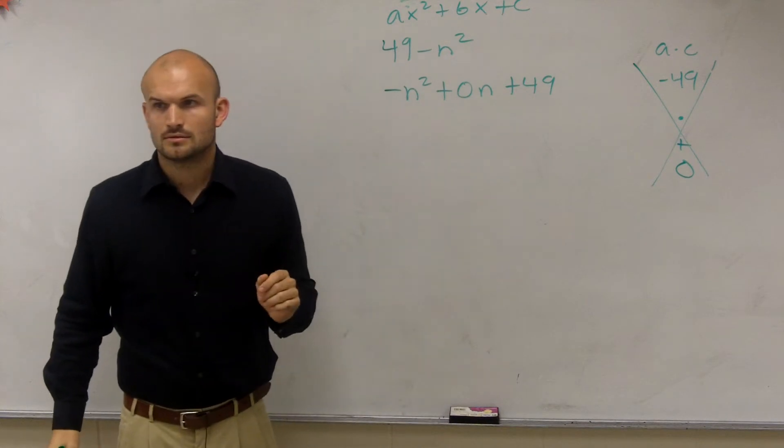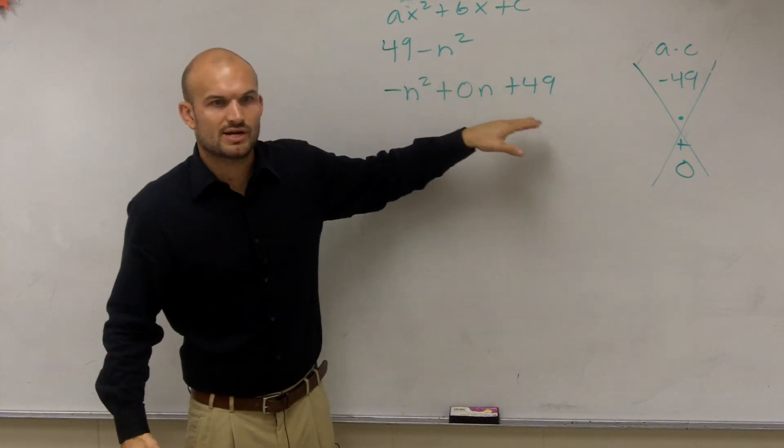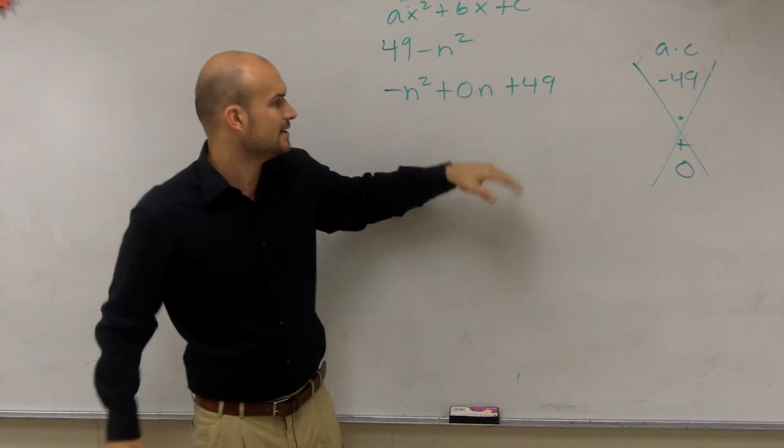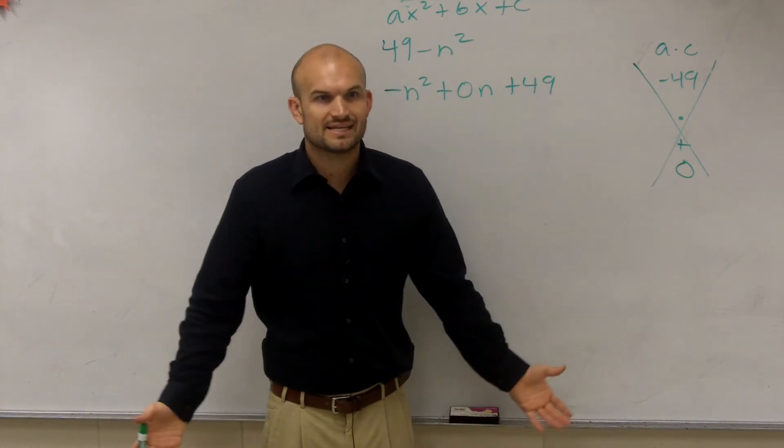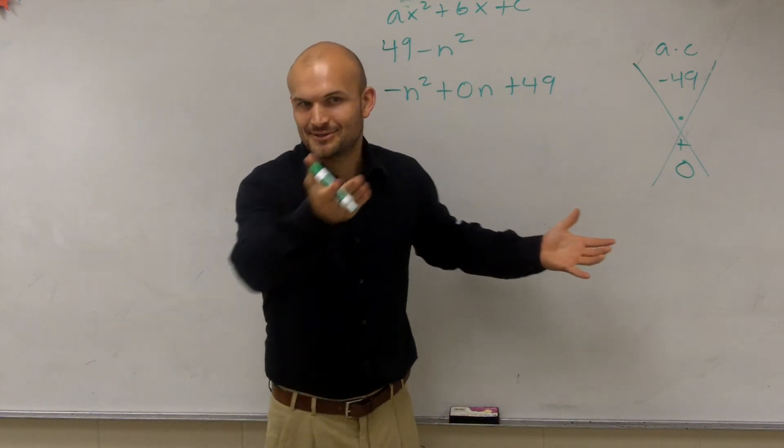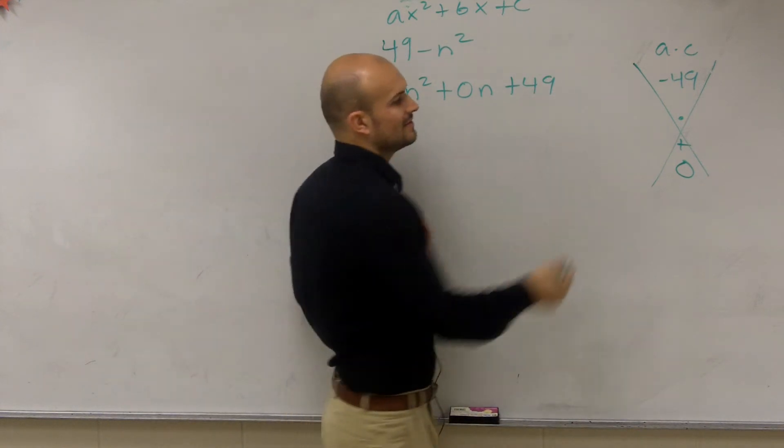Question? Does everybody follow me? So make sure you guys put it in quadratic form. We'll learn the shortcut later. Now, what two numbers multiply to give you negative 49 but add to give you 0? Think about it. If they add to give you 0, they have to be exactly the same, yes?